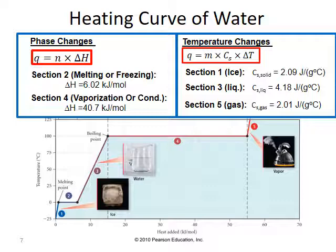Sections 2 and 4 both represent phase changes. Section 2 is melting or freezing, while section 4 represents evaporation and condensation. Notice that the temperature does not change during these sections, because all added heat energy goes towards breaking the molecules free from the restrictions of intermolecular forces so they can move more freely. The amount of energy absorbed is calculated using the enthalpy formula: Q equals N times delta H. For melting, the enthalpy is positive 6.02 kilojoules per mole; for freezing, it's negative 6.02 kilojoules per mole. For vaporization, the enthalpy is much higher at 40.7 kilojoules per mole, and for condensation it is negative 40.7 kilojoules per mole.